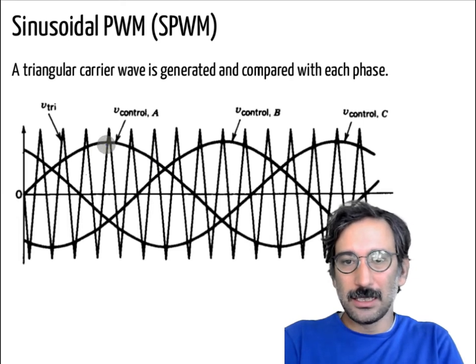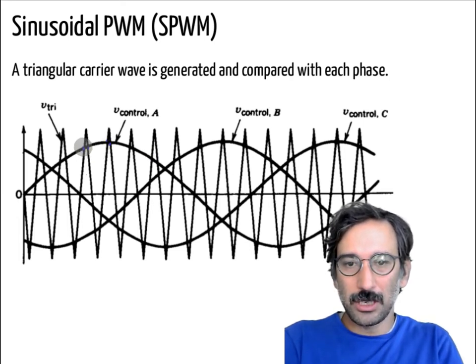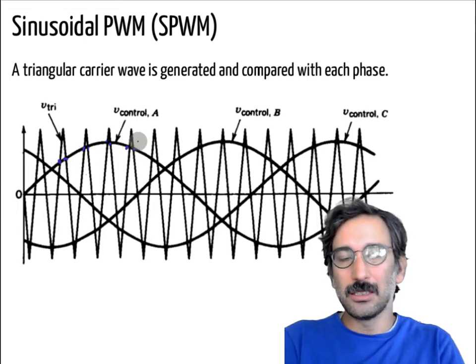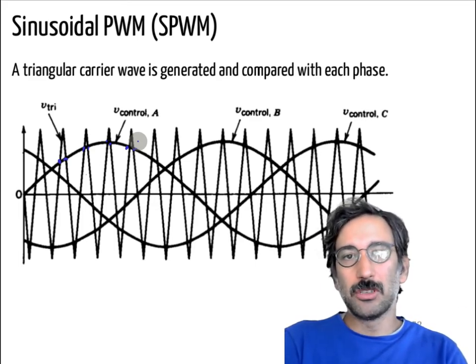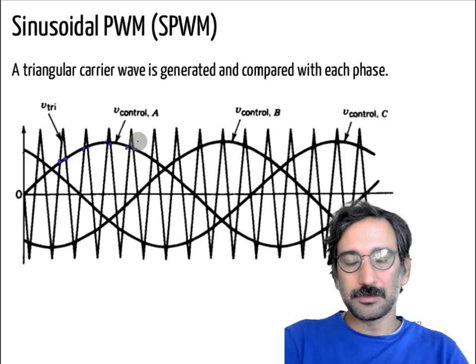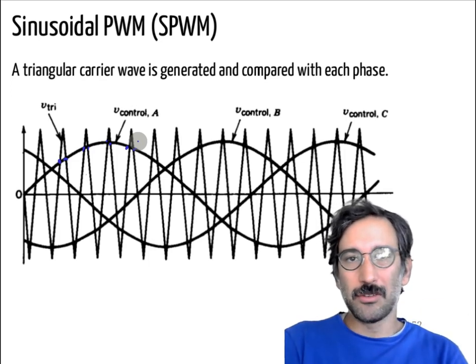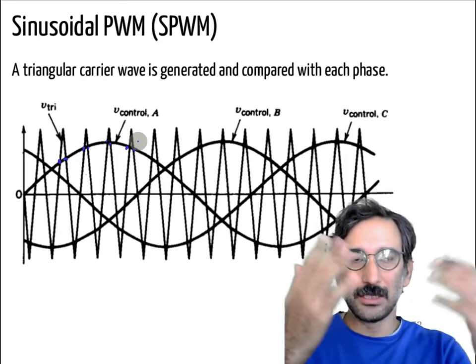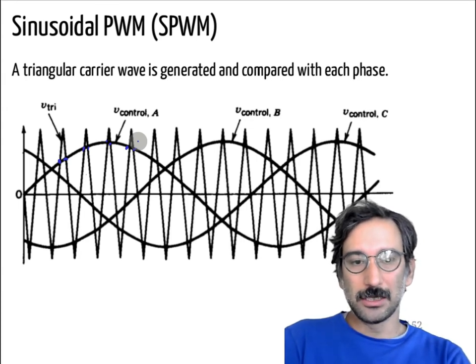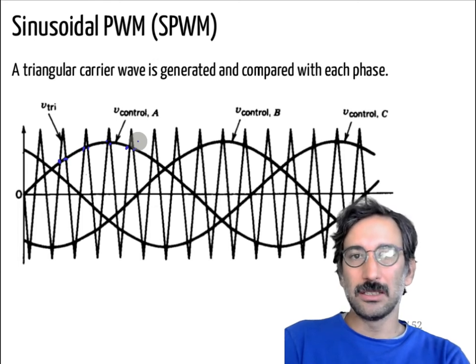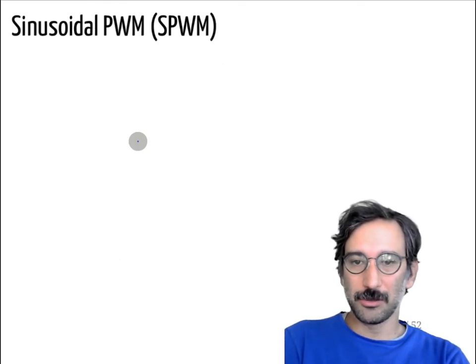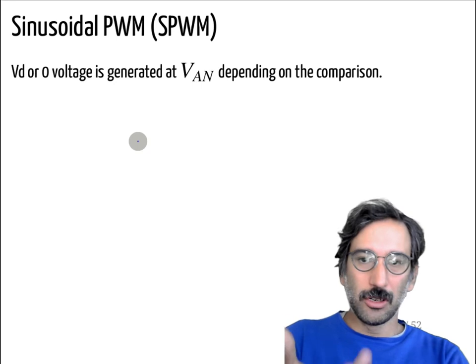Control signal. Then depending on those crossing points you either turn on the top transistor or the bottom transistor. Again for unipolar and bipolar remember you can also create the negatives of those reference voltages and compare it separately with the top and bottom ones. So if you have any trouble on those, please watch the single-phase inverters video.